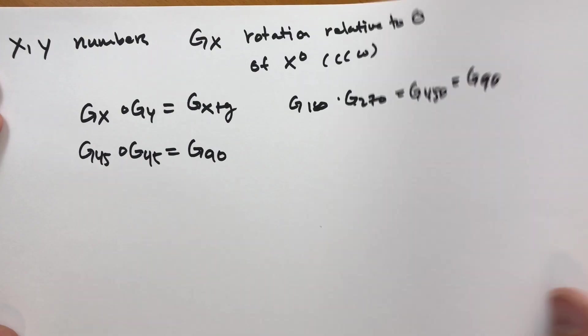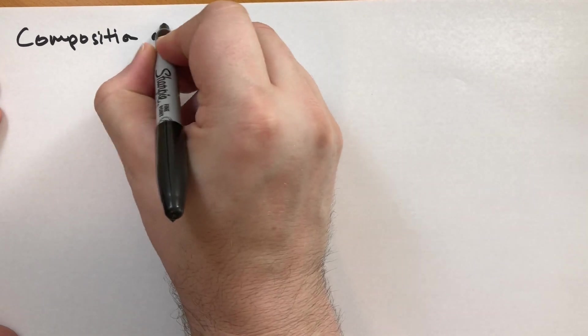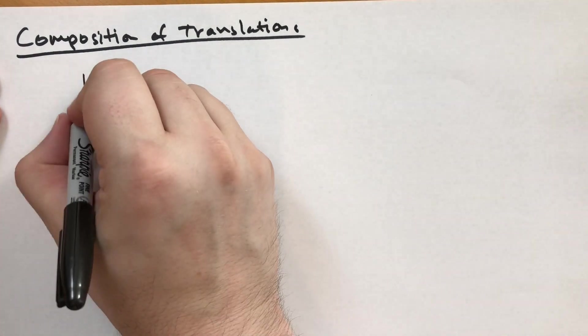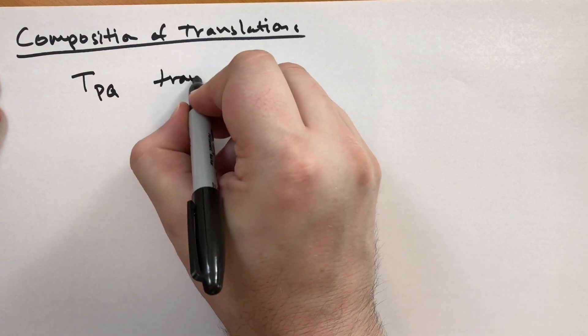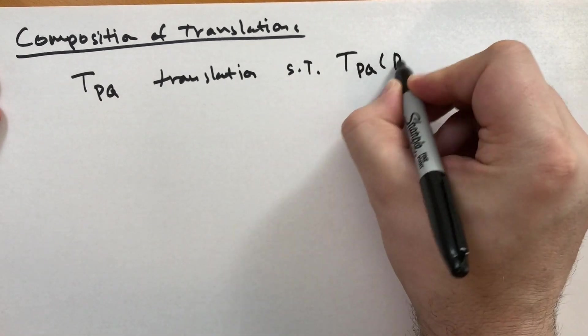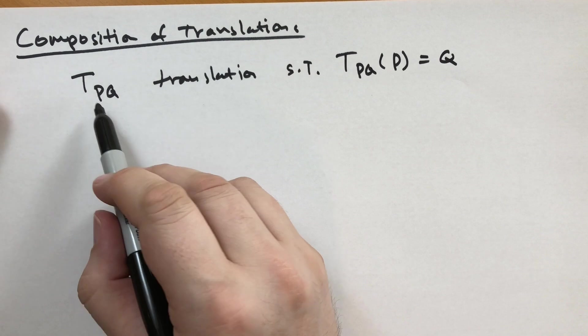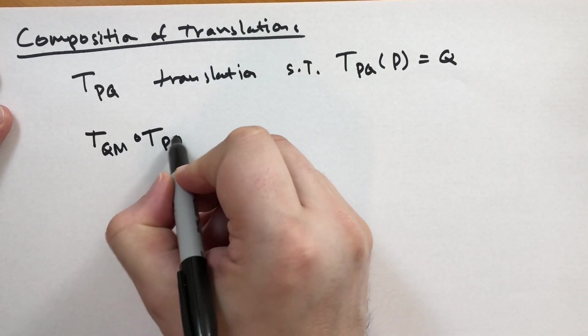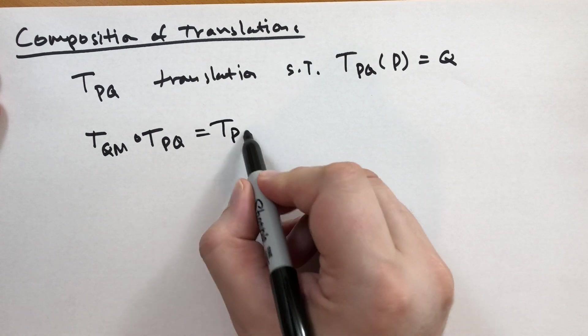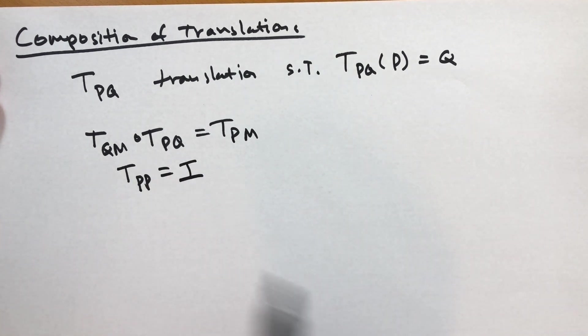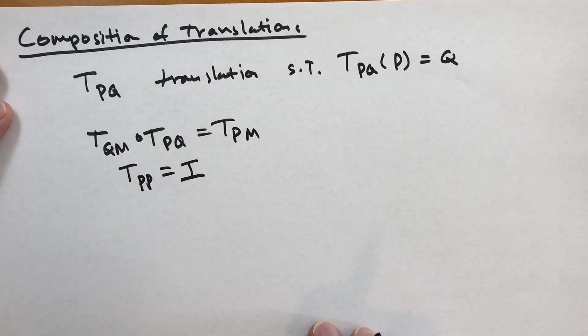Let's talk about translations. What happens when we compose translations? We can uniquely describe a translation as follows. A translation T_PQ is a translation such that T_PQ of P will give you Q. So it's identified by the point P moving to Q through this translation. And you can probably figure out that if you compose two translations, first moving P to Q and then Q to M, that's the same as starting at P and ending up at M. So those two translations are the same. And indeed, translating from the same point to the same point is the same as doing nothing at all.